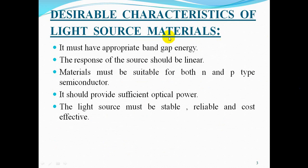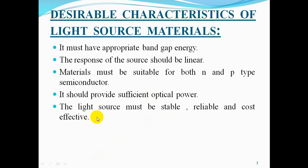The desirable characteristics of light source materials are as follows. It must have appropriate bandgap energy. The response of the source should be linear — that is, the optical power generated by the source should be directly proportional to the electrical energy applied to it. The materials must be suitable for both N- and P-type semiconductors. It should provide sufficient optical power so that it overcomes the transmission losses occurring in the link. The light source must be stable, reliable, and cost-effective.